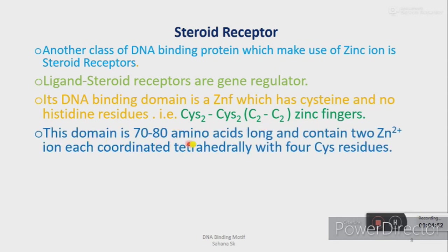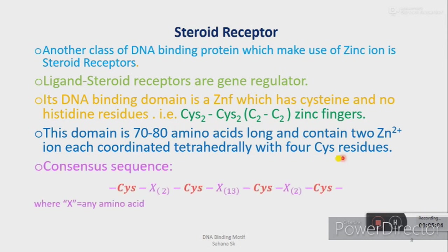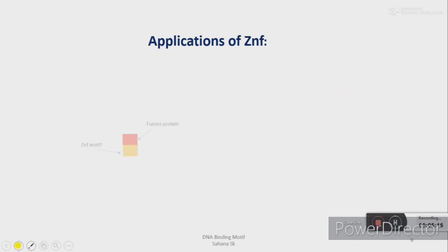This domain is 72 to 80 amino acids long and contains two zinc ions, each coordinated tetrahedrally with four cysteine residues. Its consensus sequence is as shown. Now let's discuss a few applications of the zinc finger motif.